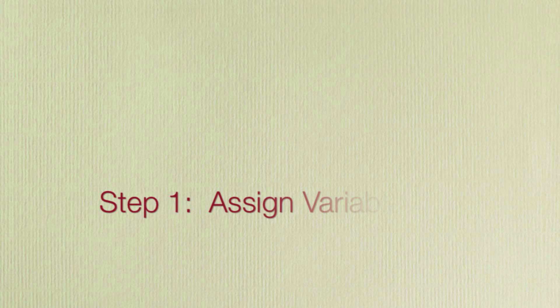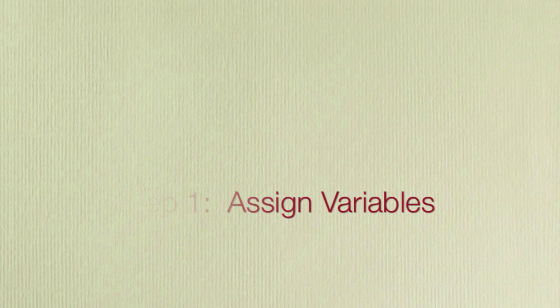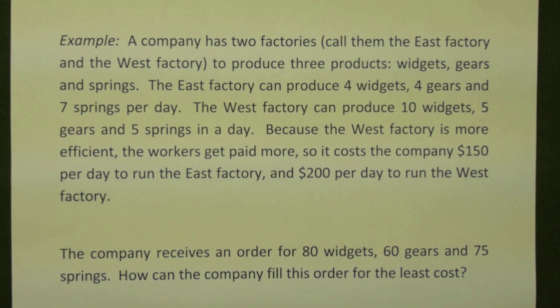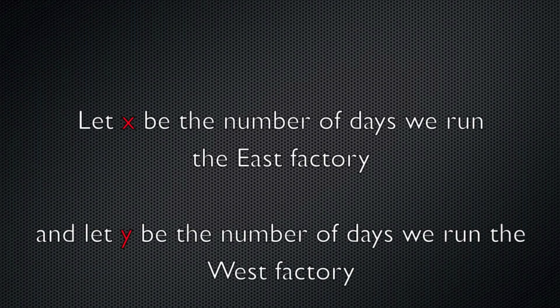Step 1: Assign variables. Looking at the problem, we don't have any freedom over the number of widgets, gears, or springs produced by either of the factories, but we do have freedom over how many days we run each factory. And so that freedom determines what our variables will be. Let X be the number of days we run the East Factory, and Y the number of days we run the West Factory.